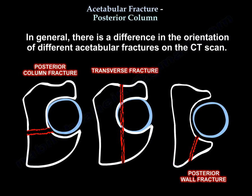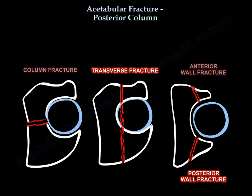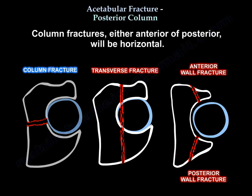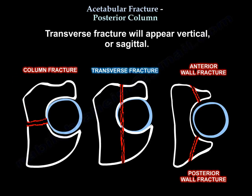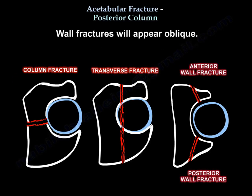There is a difference in orientation of different fractures on the CT scan. A column fracture — anteriorly or posteriorly — will be horizontal. A transverse fracture will be vertical or sagittal. A wall fracture will be oblique.